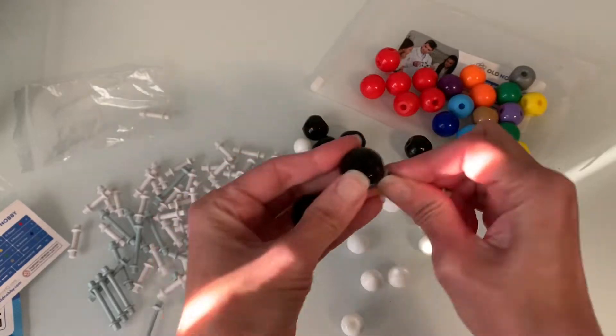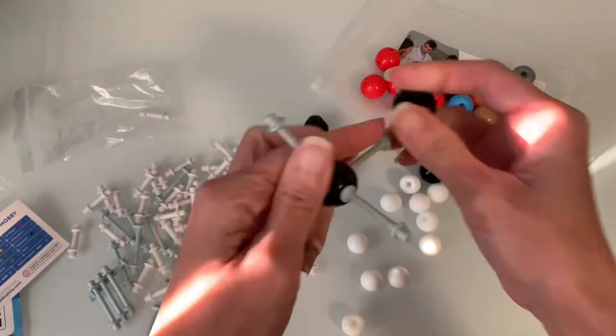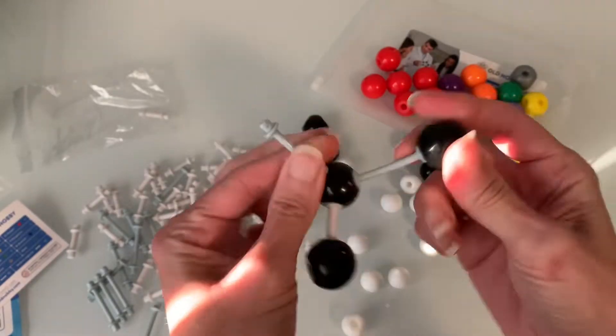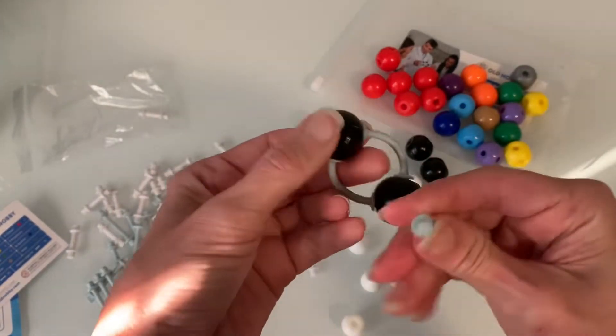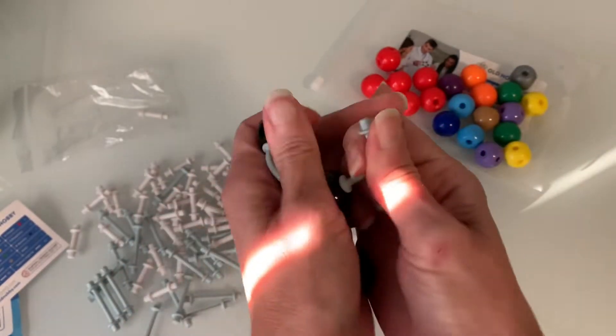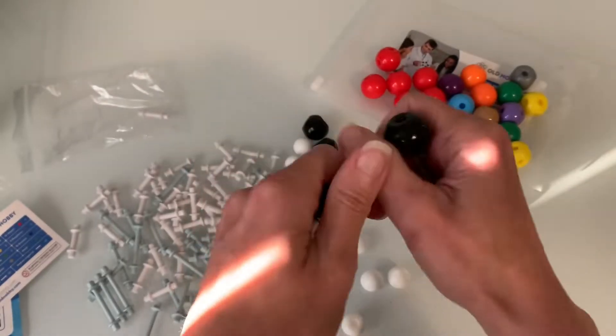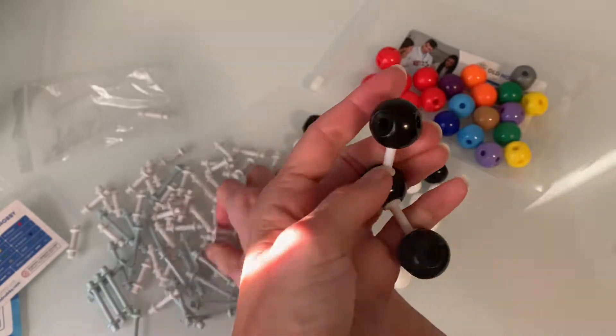It also has flexible bonds that you could use if you wanted to make models of molecules that have double bonds or triple bonds. The bonds fit really tightly into the atoms in the Old Knobby kit which means I didn't have any issues with my models falling apart as I was building them and the molecules held their shape really well. Overall I was pretty happy with how well the bonds and the atoms fit together.